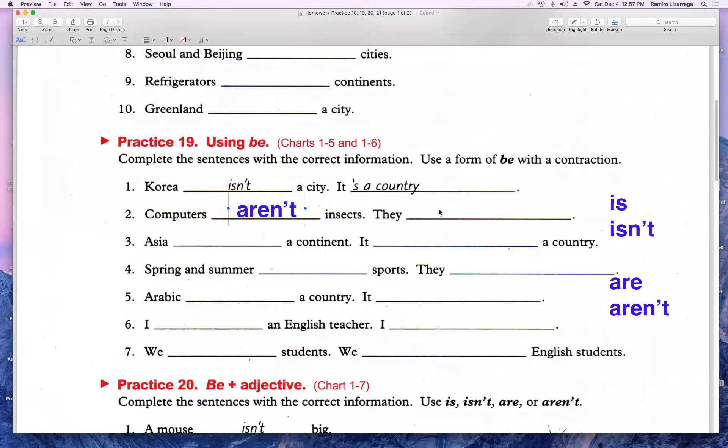Y acá tengo que sí decir que son. Entonces yo tengo que escribir acá, por ejemplo, computers. So they are. ¿Qué son? ¿Qué dijimos que son? Creo que esto lo vimos al inicio. Machines. Tenemos que decir que son. They are machines. Acuérdense que ya habíamos visto este vocabulario.